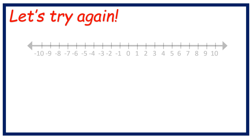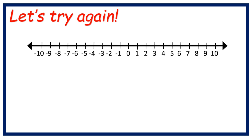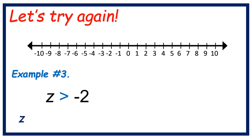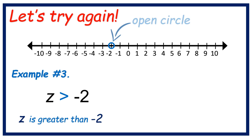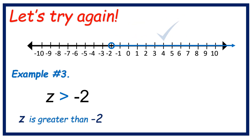Let's try again. Example number 3: Z is greater than negative 2. First, let's look for negative 2. Draw an open circle. Then, since the symbol is pointing to the right, we're going to use an arrow going right. Just like that.